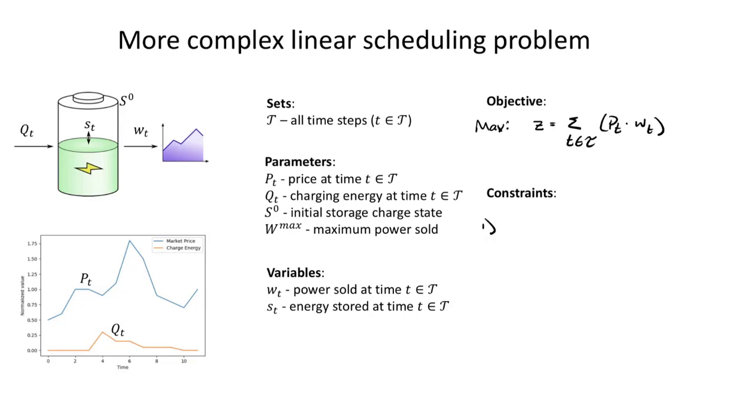So we would say our first constraint is let's make sure that the power we're producing is less than or equal to the maximum power that can be produced. And this has got to be true for all, so again, for all T in our time period that we've identified.